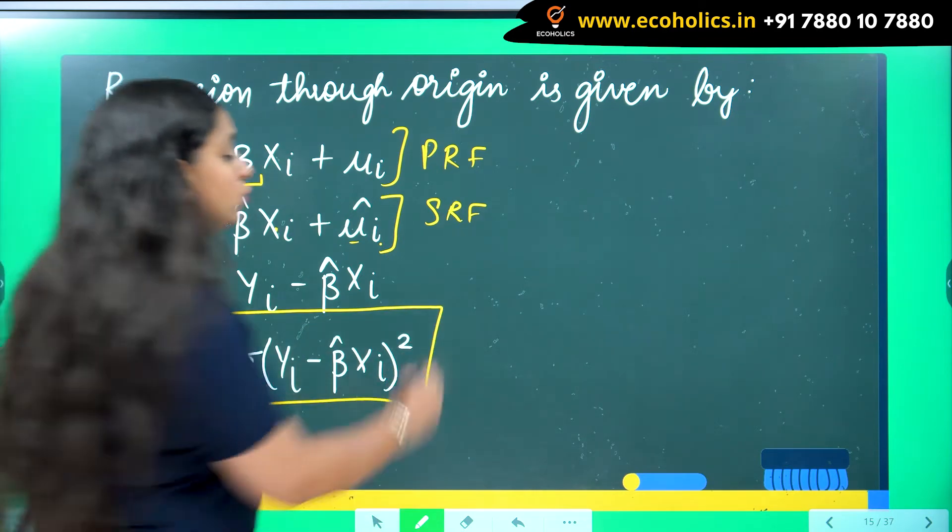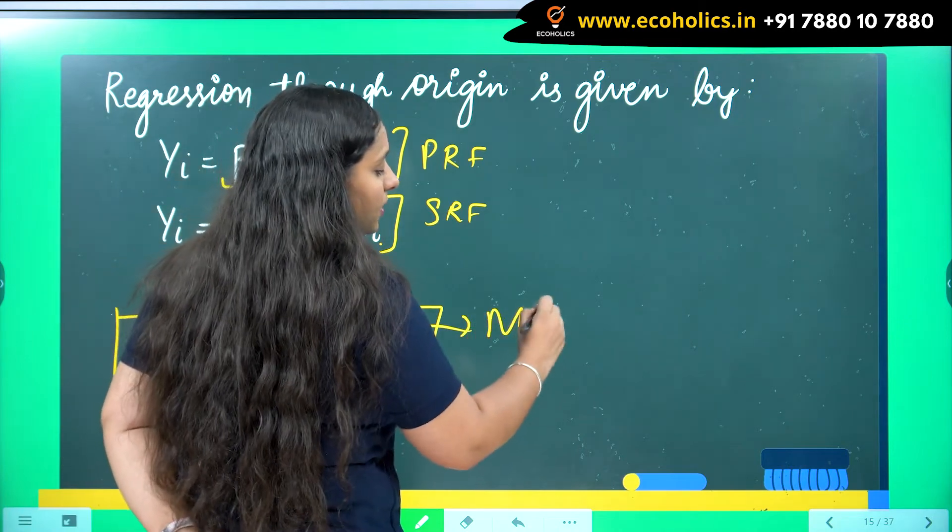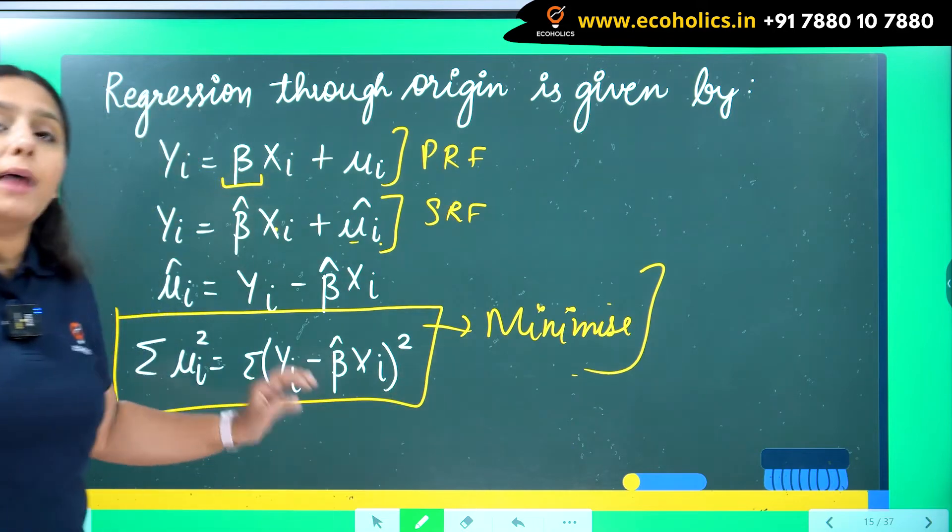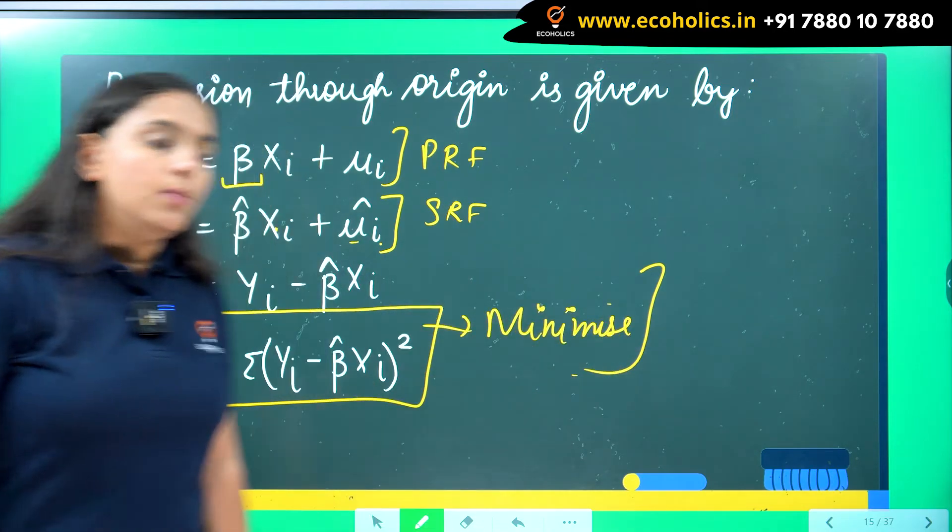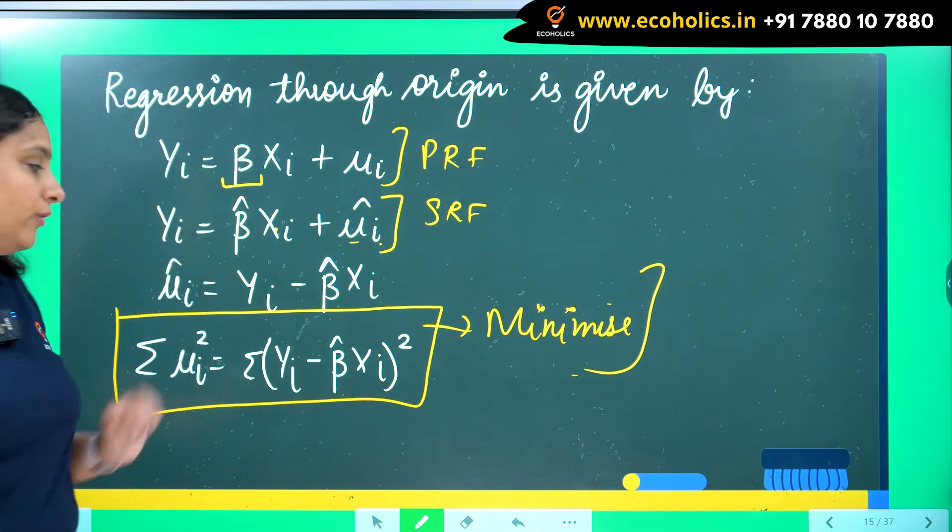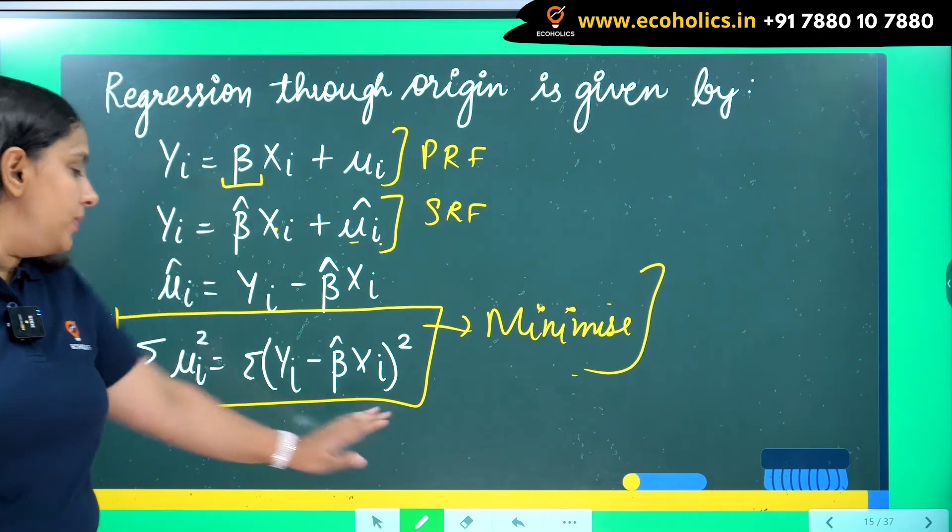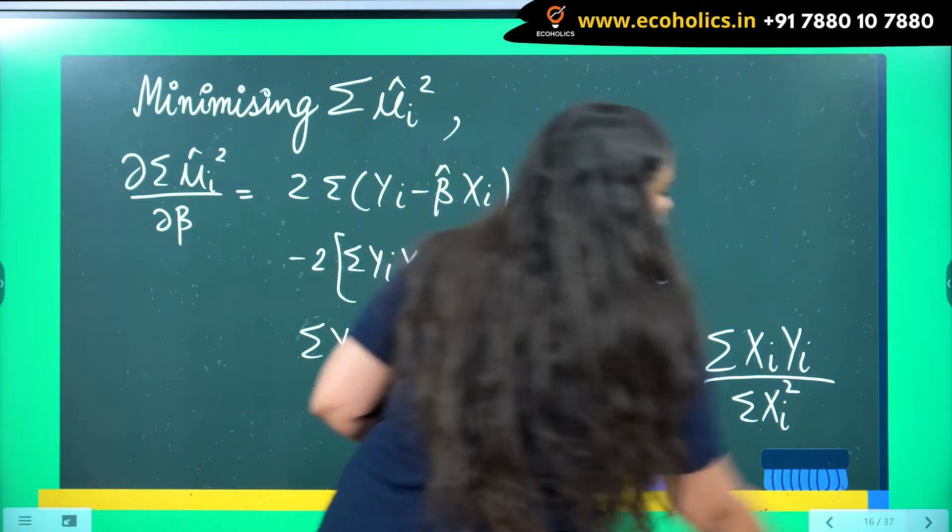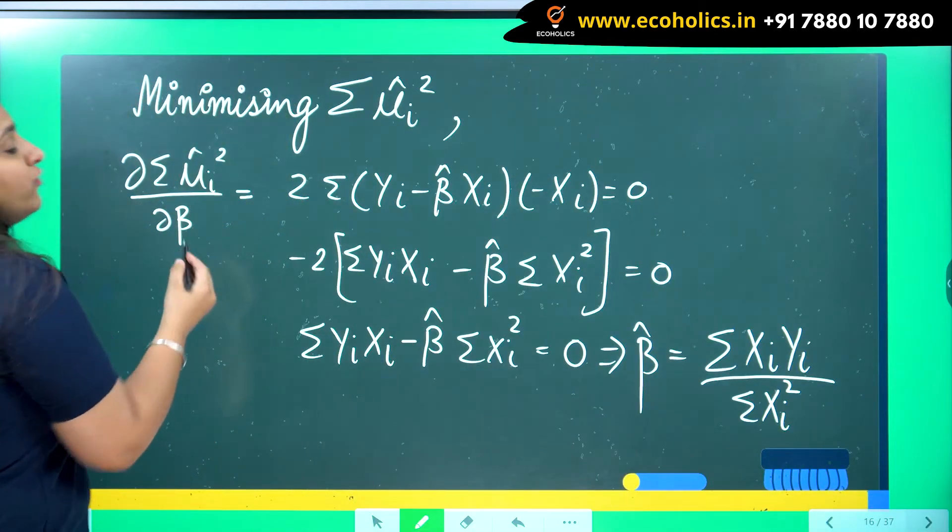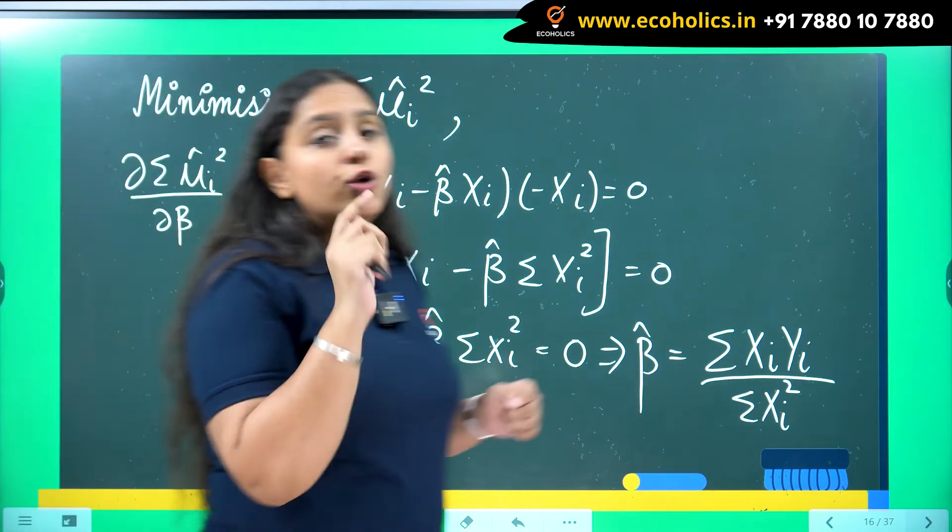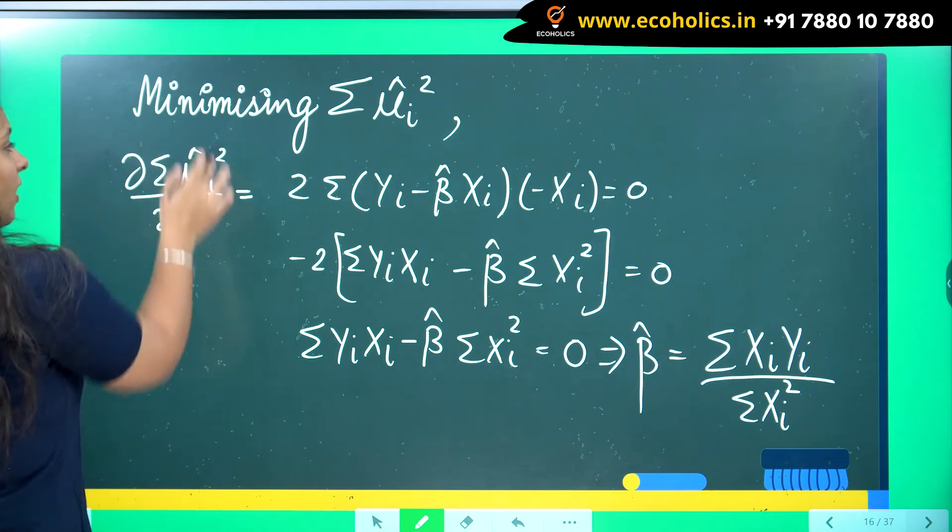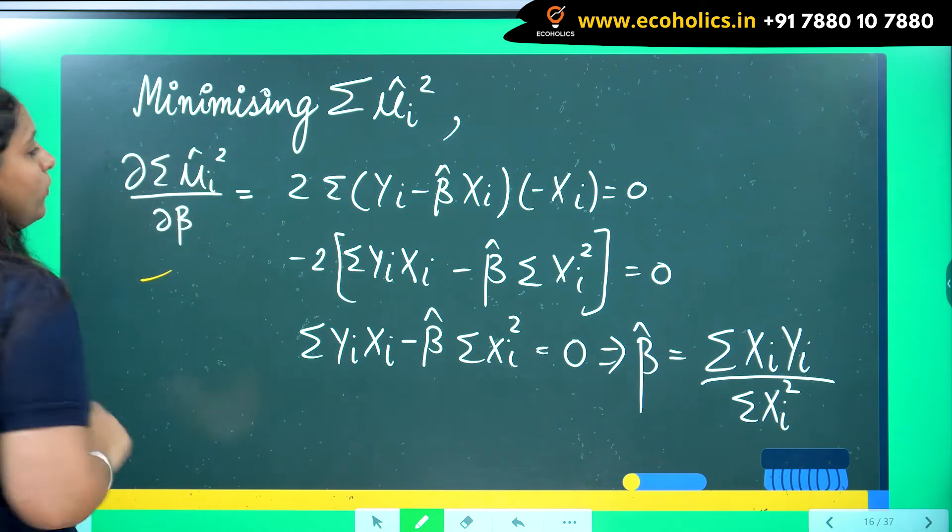Now I have to minimize this because where I will minimize my errors, I'm going to get my BLUE estimators, BLUE slope coefficient estimators according to the method of OLS. So I will now be minimizing this summation mu i square. How to minimize it? Try doing the derivative with respect to the variable for which you have to find out the value.